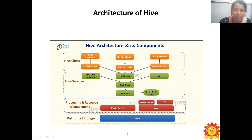The third component under the Hive architecture is Processing and Resource Management. Under this, we have MapReduce, Tez, and YARN. The fourth component under the architecture is the distributed storage. All the data in Hive are stored under the distributed file system, which is the Hadoop Distributed File System (HDFS).